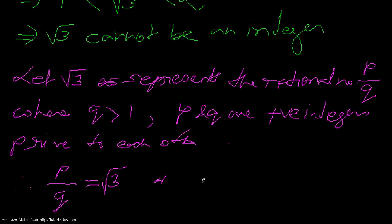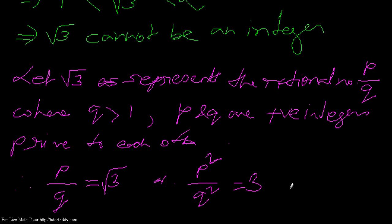If we square both sides, that means p squared by q squared equals 3, because squaring a square root gives you the number itself. So we have p squared by q squared equals 3, or we can write p squared equals 3q.